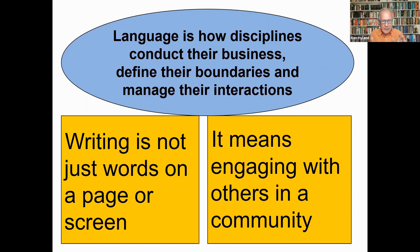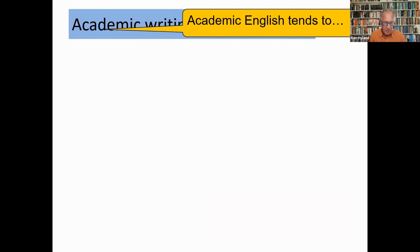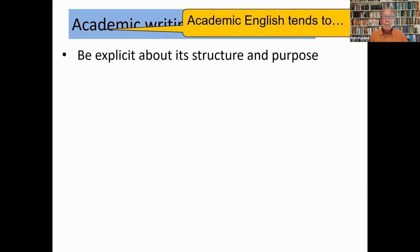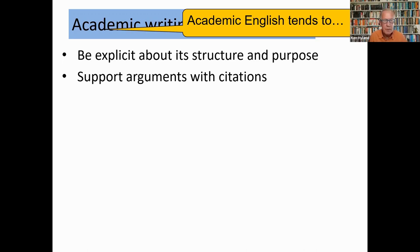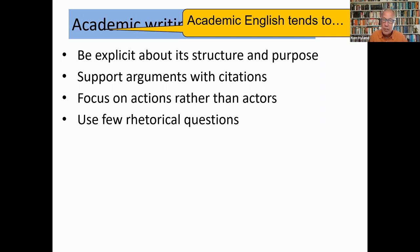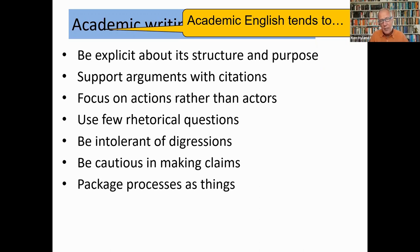It's important that students understand that writing at university is very different from writing at school. It's not about personal opinion, essays or grammar practice. We need students to take responsibility for clarity in their writing. Academic writing in English, unlike many other languages and registers, tends to be more explicit about its structure and purpose — say what you're going to say, say it, and then say what you've said. It uses more citations to support arguments, focuses on actions rather than actors, uses fewer rhetorical questions, is generally intolerant of digressions, is cautious in making claims, packages processes as things, and spells out steps in an argument very explicitly.